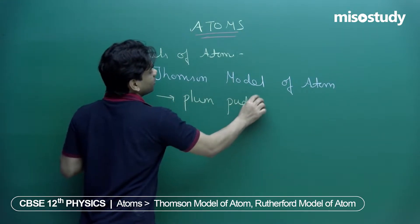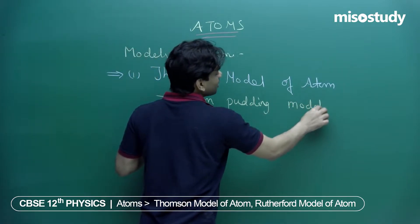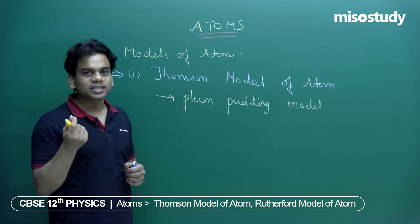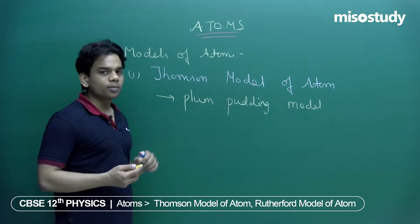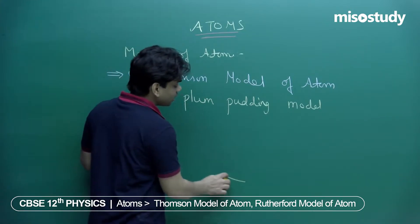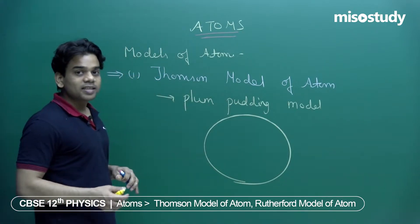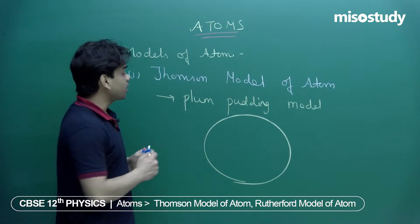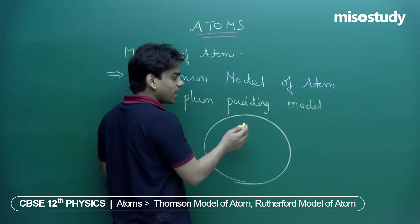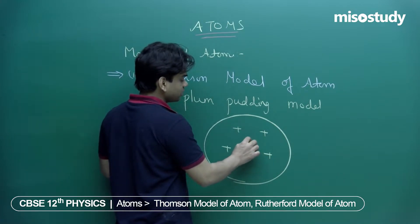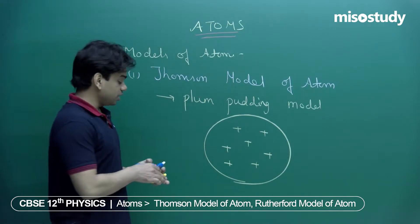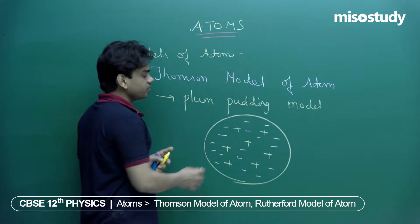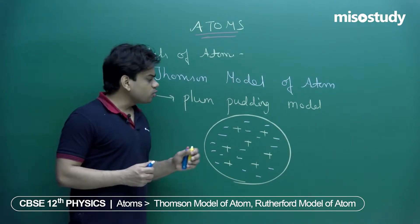Just like a plum cake where chocolate chip particles or small cherries are spread all over, Thomson said that in his plum pudding model the entire atom comprises positively charged particles, and to make the atom neutral, negatively charged particles are spread all over within the volume of the atom. This is the Thomson model of atom.